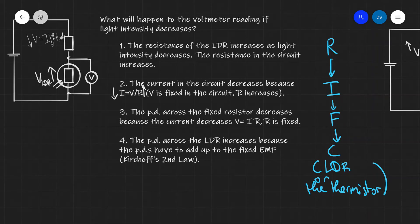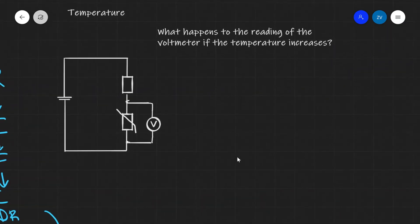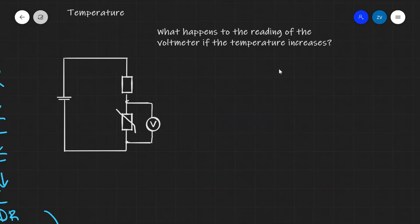So this is really, really important. We start off with the resistance of the LDR in the circuit, moving on to the current, then the fixed resistor, and finally the component. Now let's have a look at a thermistor question. We have a potential divider with a fixed resistor and a thermistor. We also have a voltmeter across the thermistor. The question is asking us what will happen to the reading of the voltmeter if the temperature within the circuit is increasing.